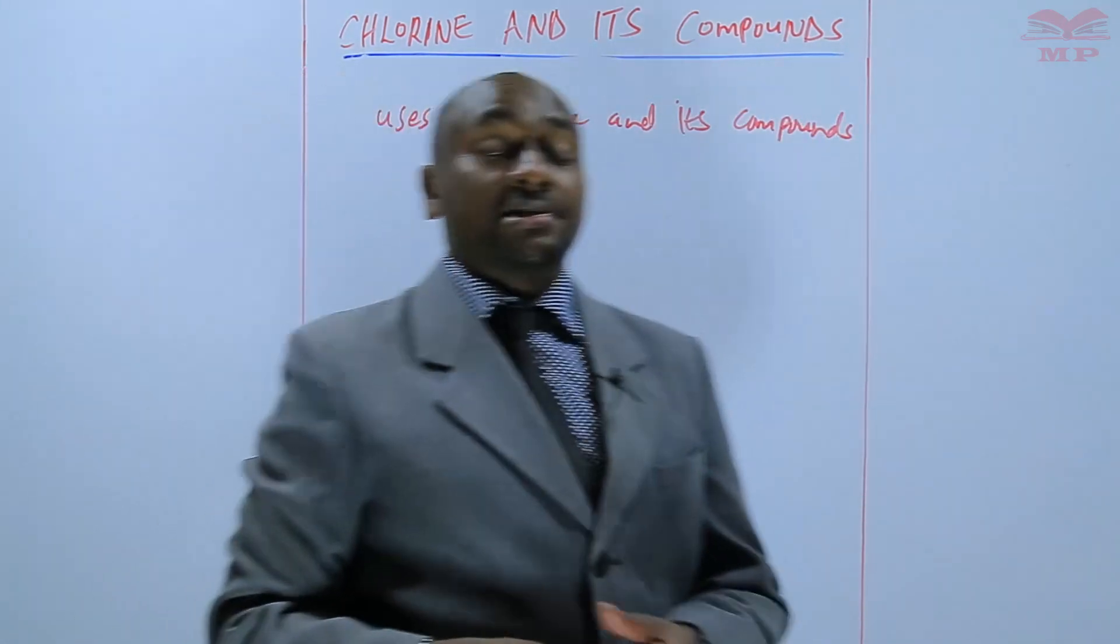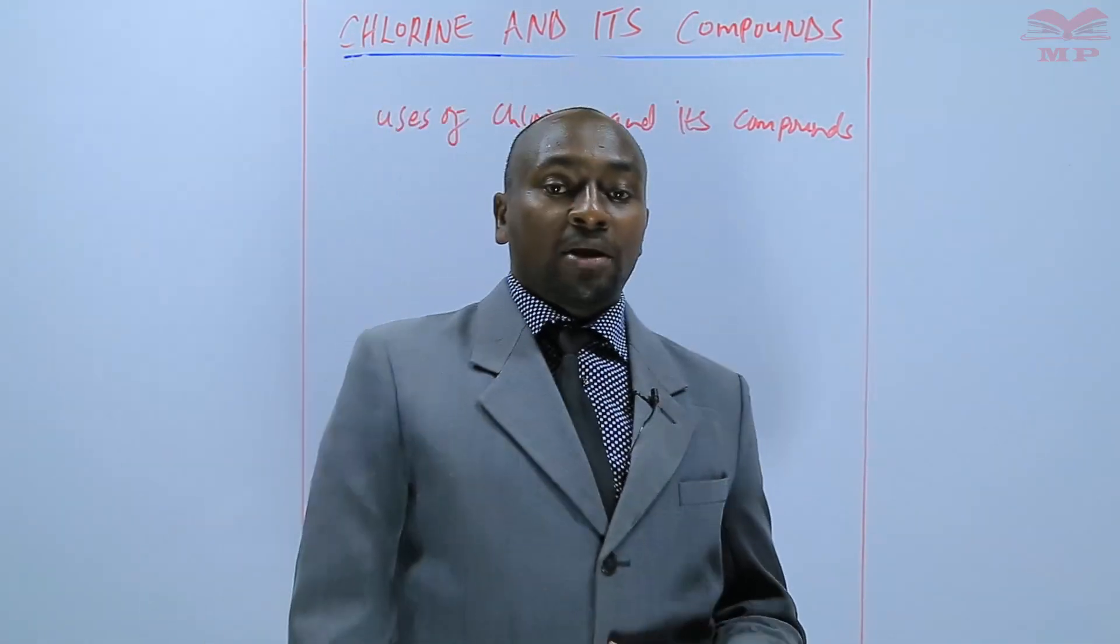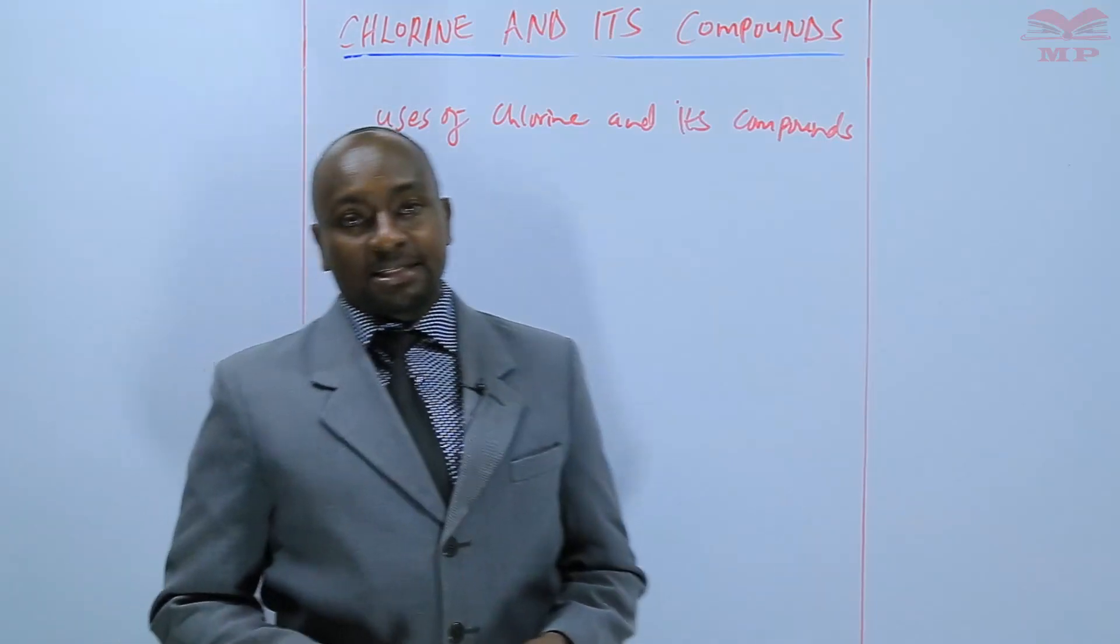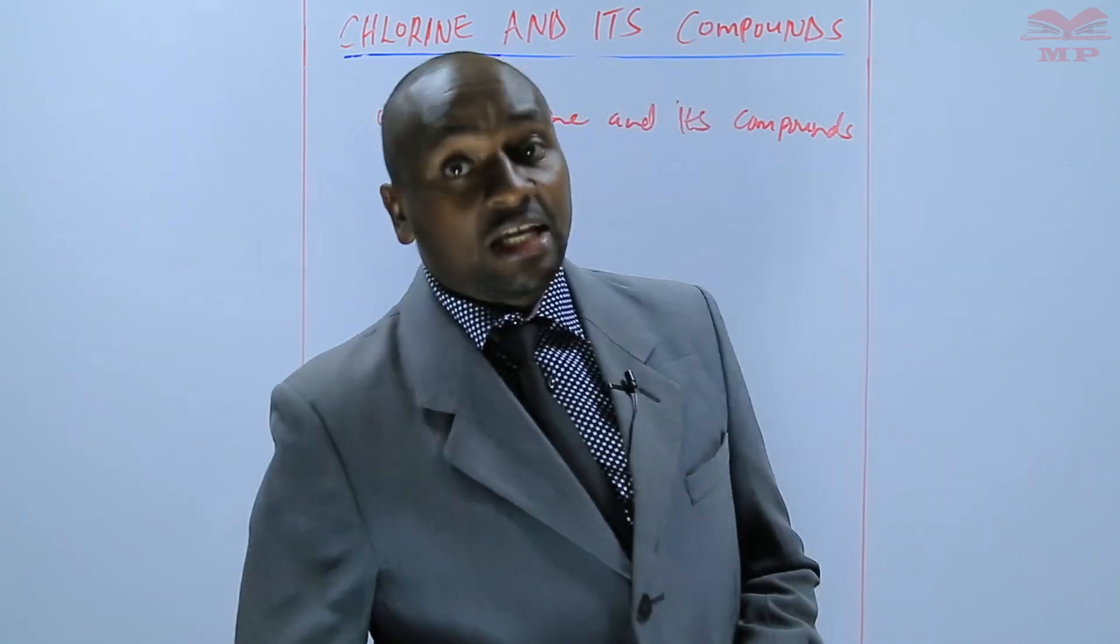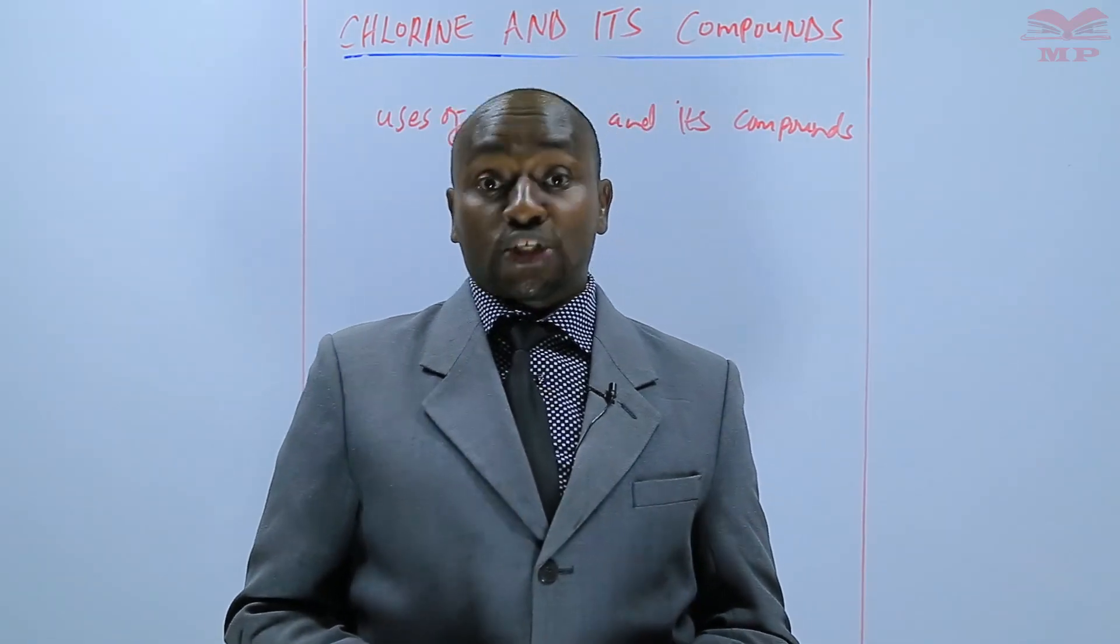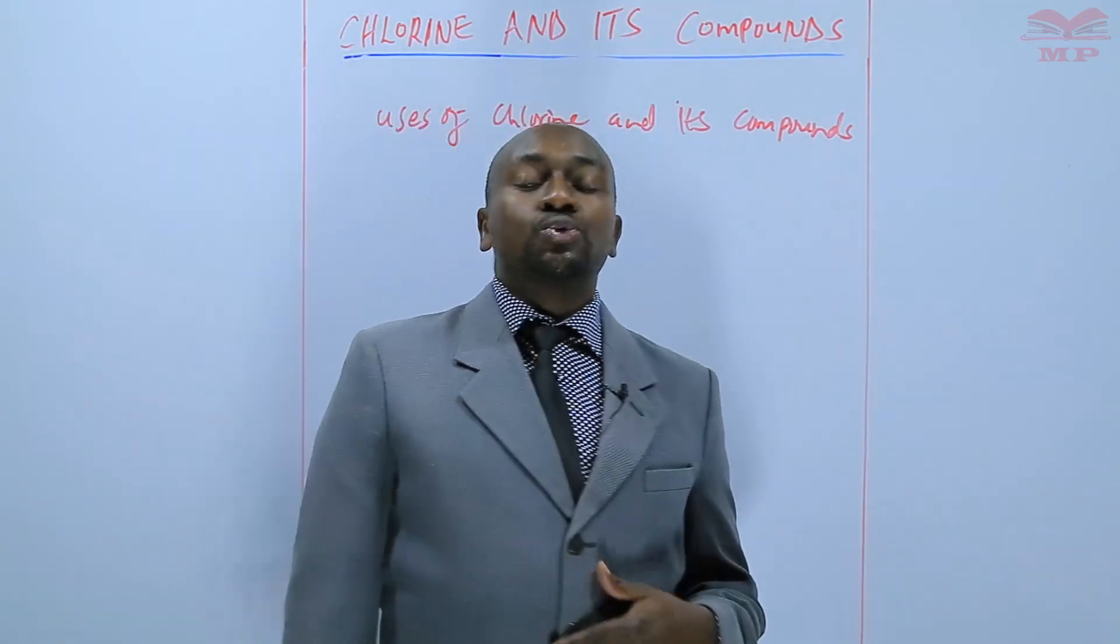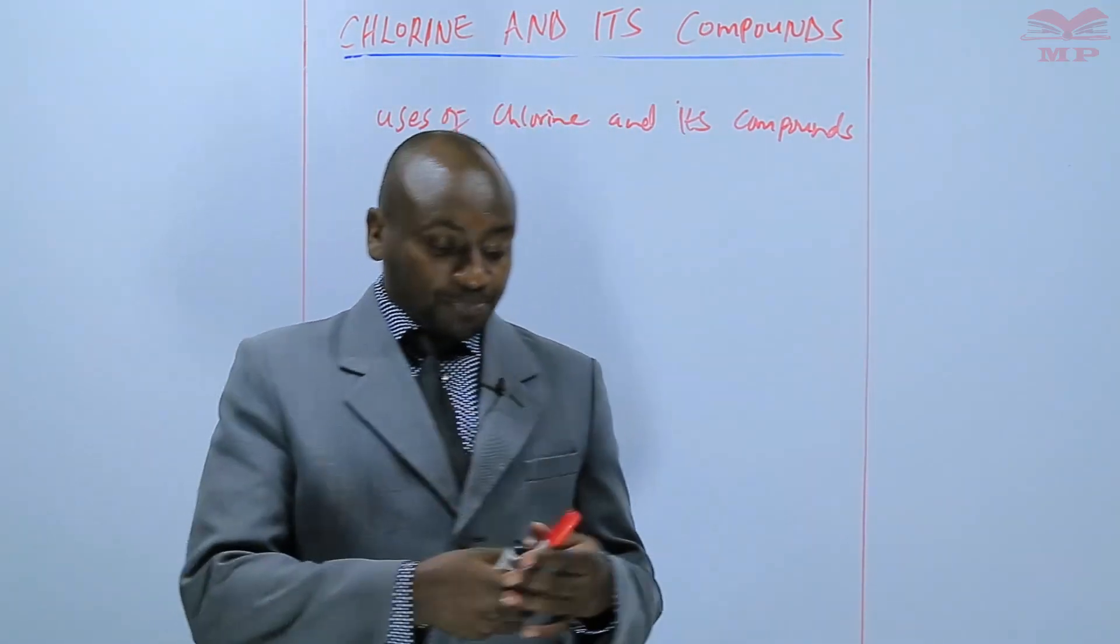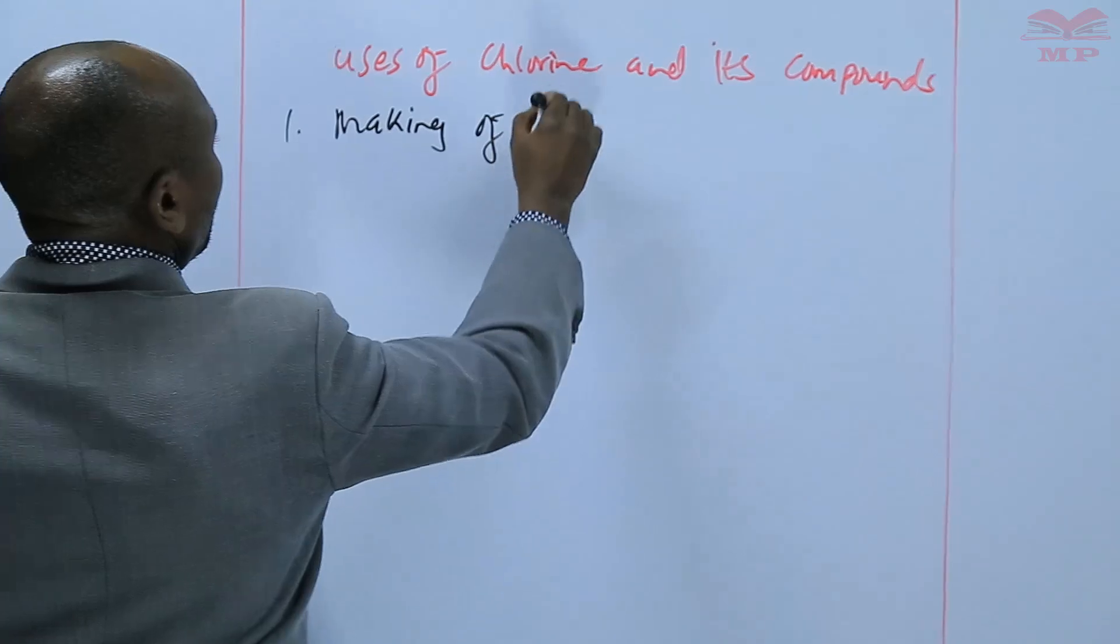We have various uses for chlorine. Some of them we have mentioned along the way. For example, when we mentioned that chlorine water has bleaching properties, that tells us that chlorine is used in the making of bleaching agents. The bleaching agents made using chlorine bleach by oxidation, and bleaching by oxidation is more permanent compared to bleaching by reduction.